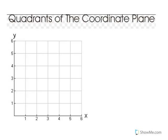Alright guys, today's topic we're going to discuss the coordinate plane. We're going to talk about the quadrants. There's four of them, and that's where the word quad comes from. Quad means four. And we're also going to locate points on all four quadrants.